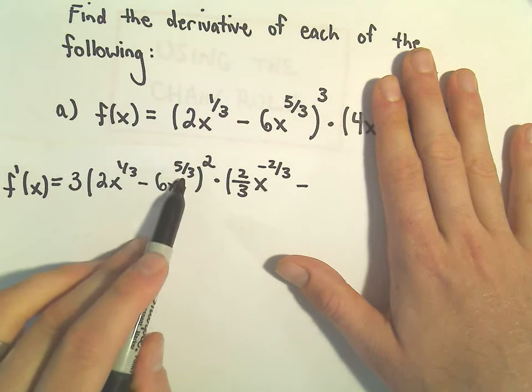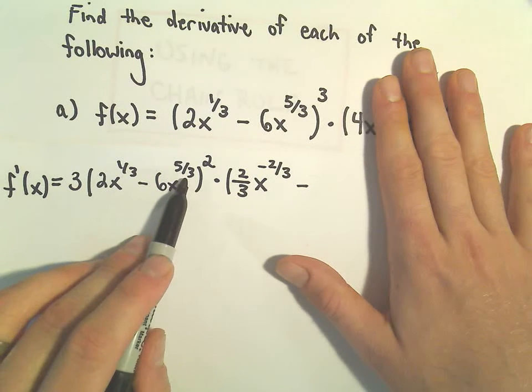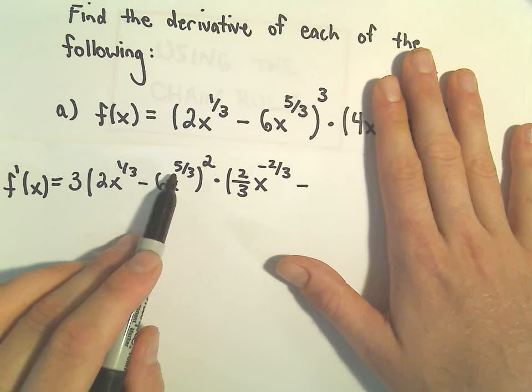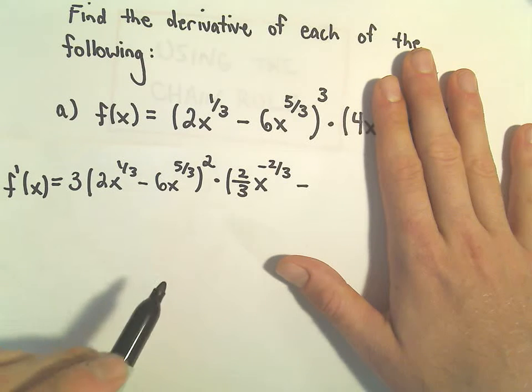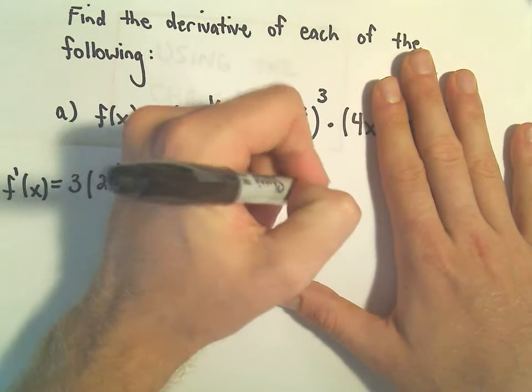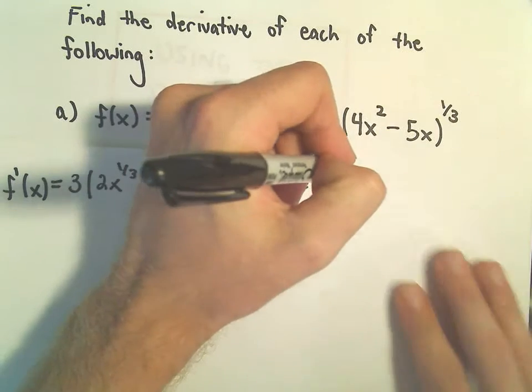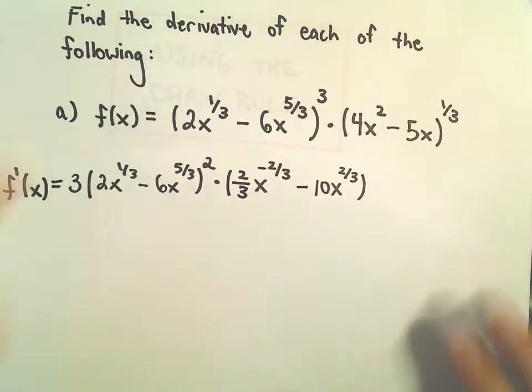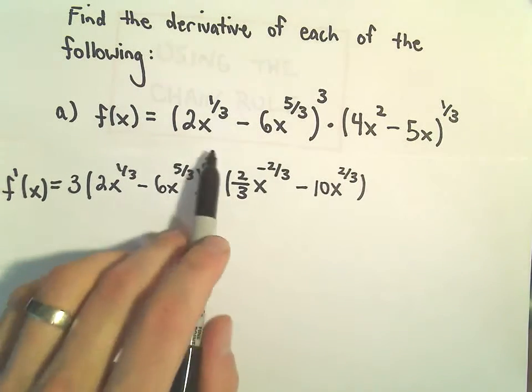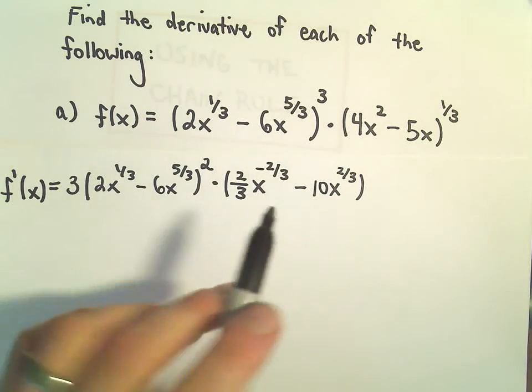And then minus, we'll have to do the same thing for when we take the derivative of 6x to the 5/3. We'll get 6 times 5 over 3. Well, 6 times 5 is 30 over 3 will give us 10x. If we subtract 3/3, that will give us to the 2/3 power. So now we've taken the derivative of the first factor using the chain rule.